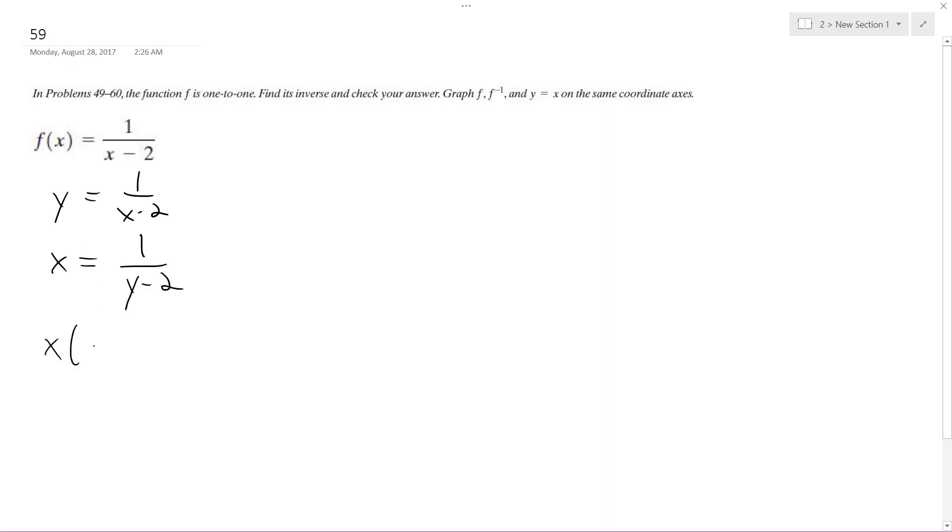Multiply both sides so we get x times y minus 2, divide through by x, we get y minus 2 equals 1 over x, and then finally y is equal to 1 over x plus 2.